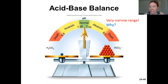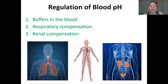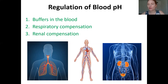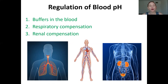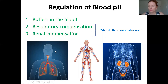How does our body maintain such a specific narrow range? There are three mechanisms: buffers in the blood, respiratory compensation, and renal compensation. Whenever we say compensation, we mean actions or responses taken to return us to the normal range. Think about what the respiratory system has control over that would affect pH, and what the renal system has control over — because these compensation mechanisms will be very logical.